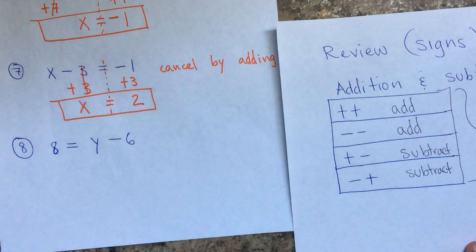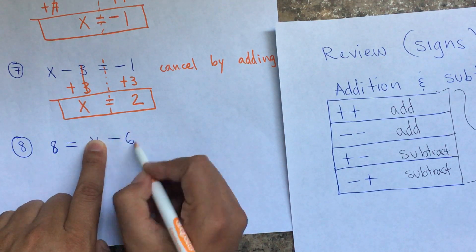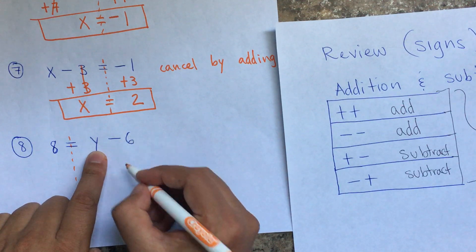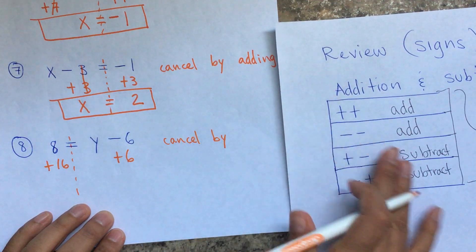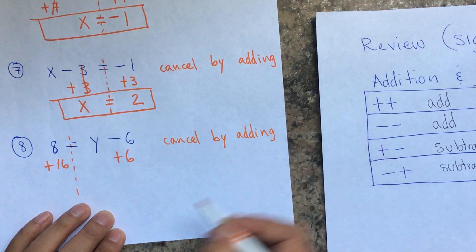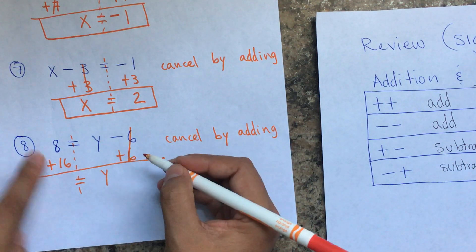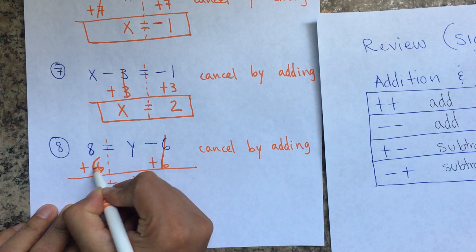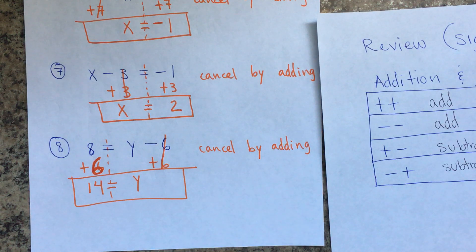The last one: I'm subtracting, and remember — leave the variable by itself, cancel whatever is on that side of the equal sign. If I'm subtracting six, the opposite is to add six — cancel by adding. That cancels to zero, and on the other side eight plus six equals 14. So Y equals 14. Have fun doing 11.7 and 11.8!